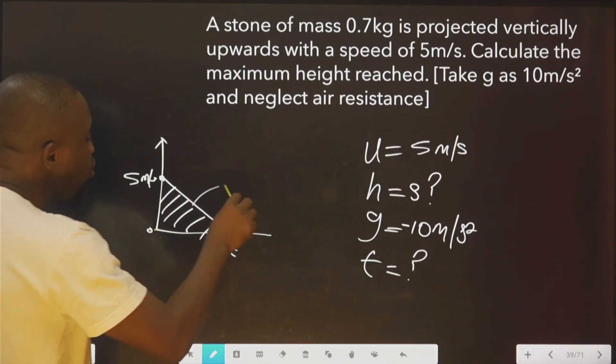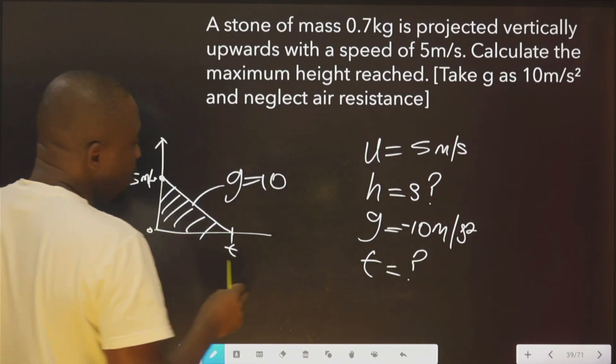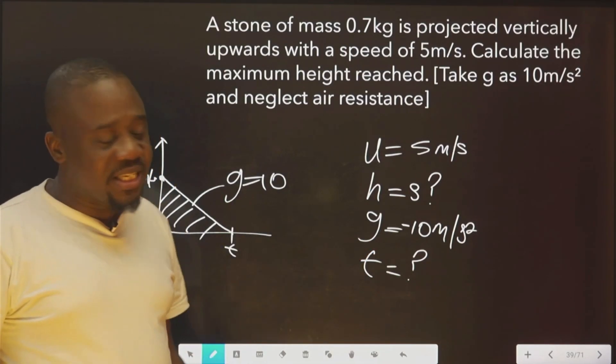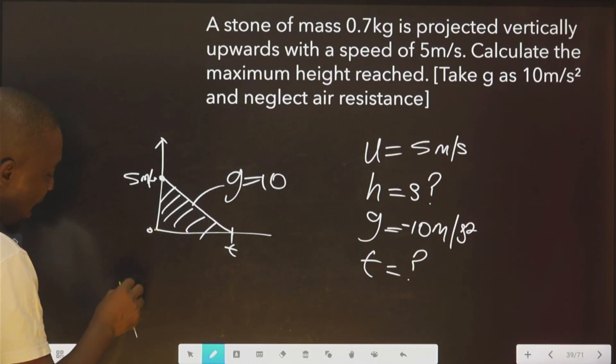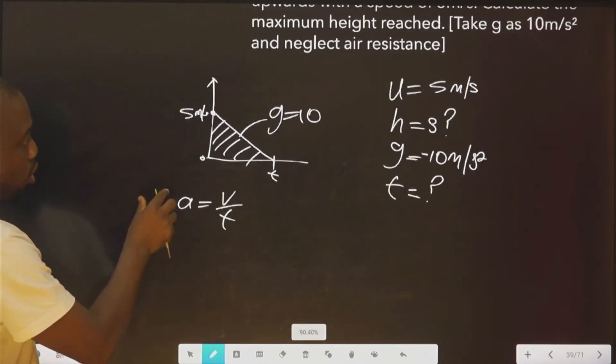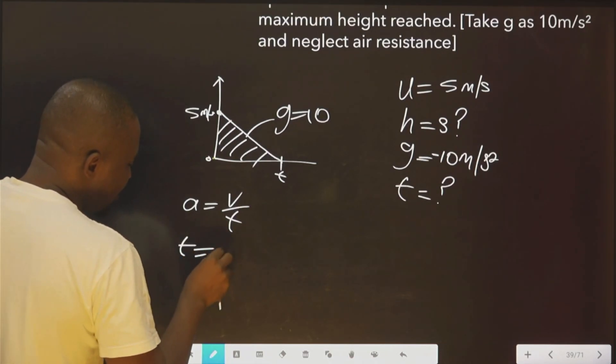Because we already know g to be 10, this time we are not going to consider negative because we are looking at time. Time cannot be negative. So t. You agree with me, acceleration is v over t. So t therefore equals v over a. We swap.